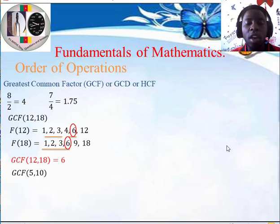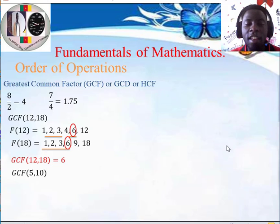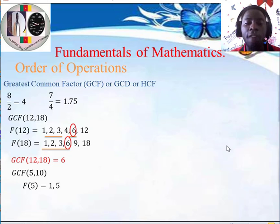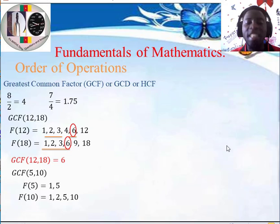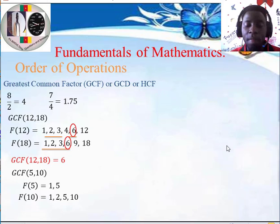Let's pick another example. What is the greatest common factor of 5 and 10? We list the factors of 5, which are just 1 and 5, because 5 is a prime number — it has only 2 factors. The factors of 10 are 1, 2, 5, and 10. The 2 factors that are common between 5 and 10 are 1 and 5. The biggest among those is 5. So the greatest common factor of 5 and 10 is 5.